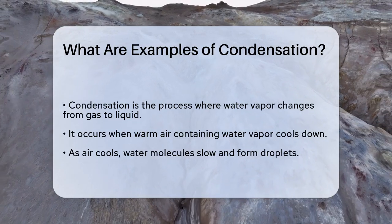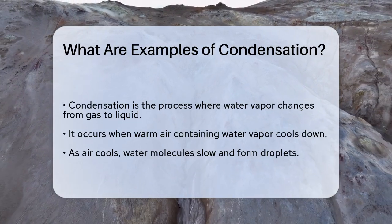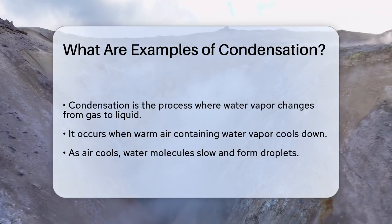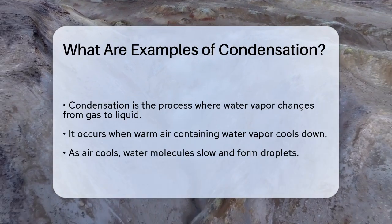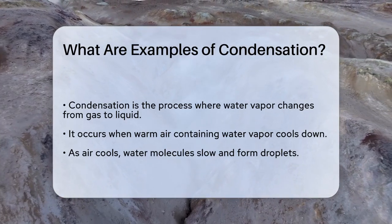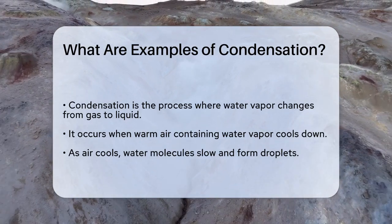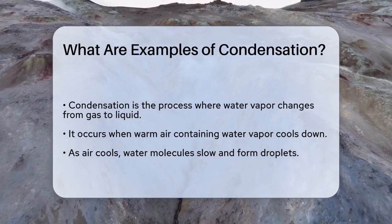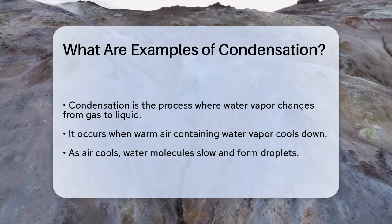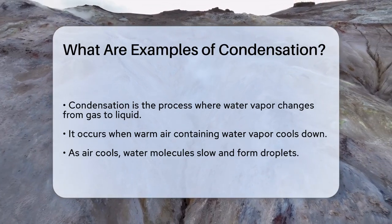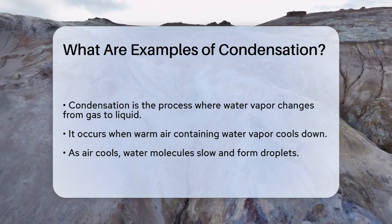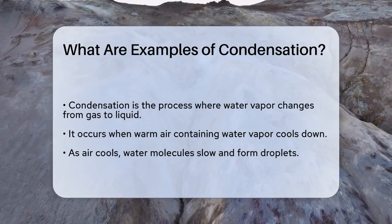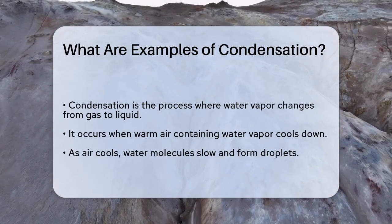Condensation happens when water vapor in the air changes from a gas to a liquid. This usually occurs when warm air, which is full of water vapor, cools down. As the air cools, the water molecules slow down and come together to form droplets of water.